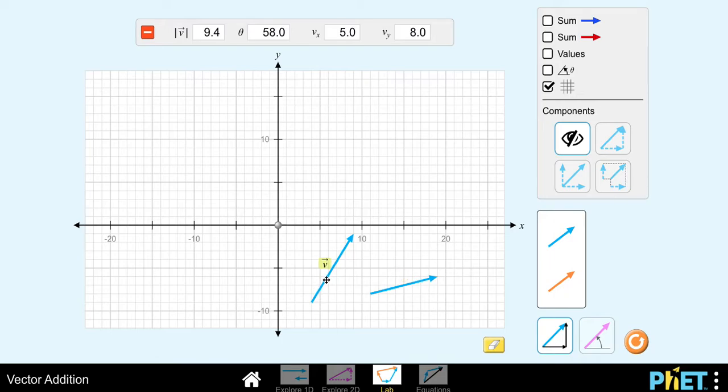So my first step is going to be to orient this vector so that the tail is at the origin at 0,0. It makes it a little bit easier to work with this simulation. And then I'm going to take this vector and I'm going to place the tail of it on the tip of the other vector.